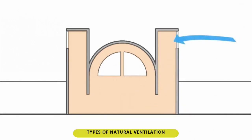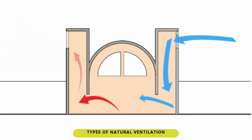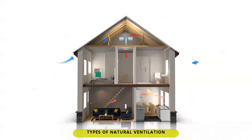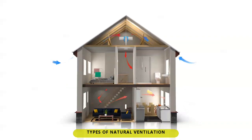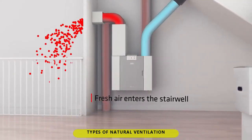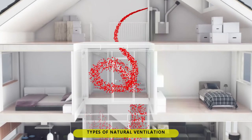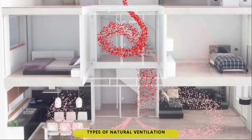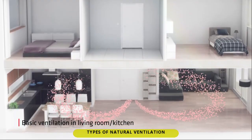4. Top down: an indoor space that has a wind scoop tower, in which the cold air enters downward to the interior space while hot air exits on low-pressure area. 5. Positive input ventilation: an indoor space in which the cold air enters downward to the interior space while hot air exits on wall openings.